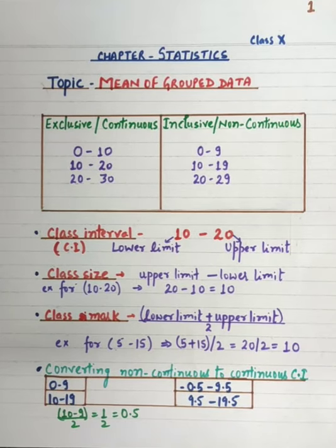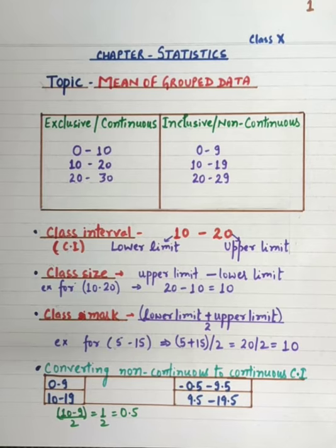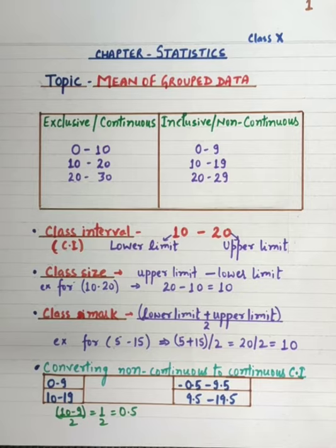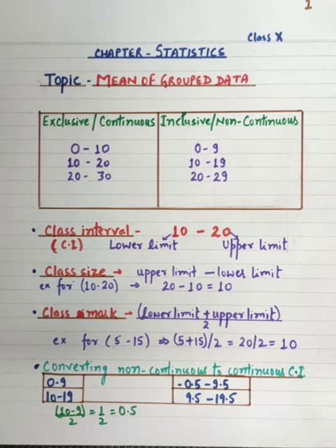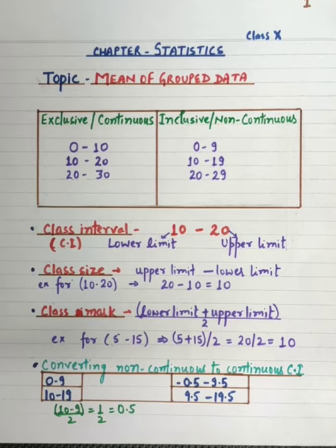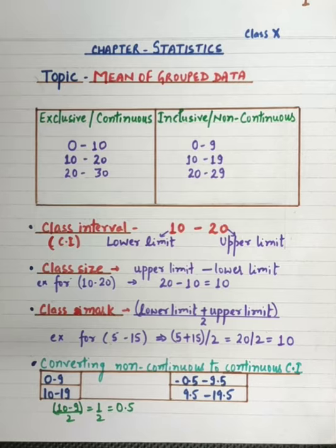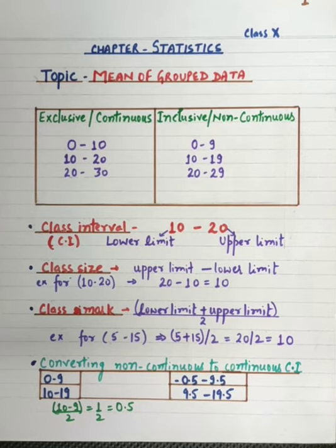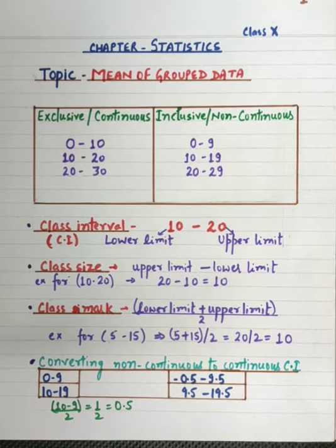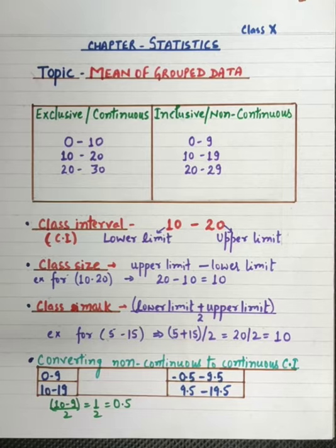Welcome, children. This is Chapter: Statistics of Class 10, and the topic is mean of grouped data. In your lower classes, you learned how to find the mean of ungrouped data. Ungrouped data means data which is randomly arranged. To find the mean there, we take the sum of all the observations and divide it by the number of observations.